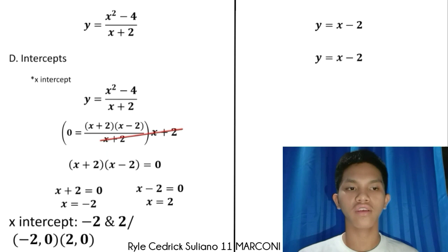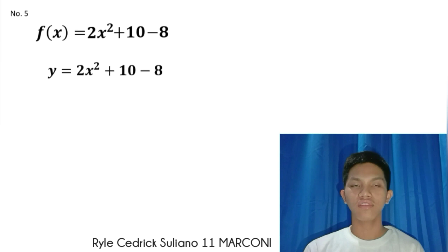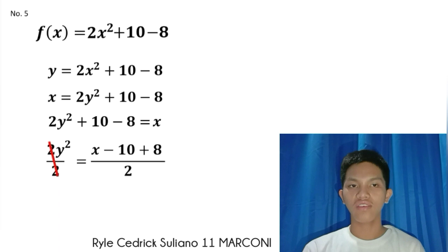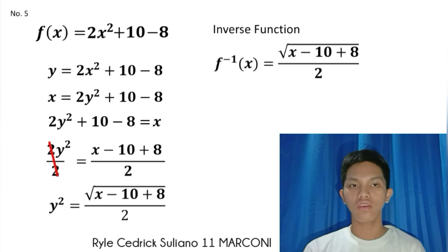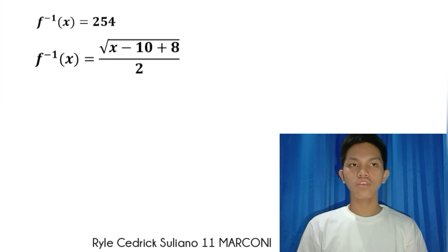We get x plus 2 and x minus 2 equals zero, so the x-intercepts are negative 2 and 2. For the second function, f of x equals 2x squared plus 10x minus 8. To find the inverse function, replace f of x with y, then swap x and y, solve for y by dividing both sides by 2, square the right side, and substitute y with f inverse of x. The inverse function is f inverse of x equals the square root of x minus 10 plus 8, all over 2.